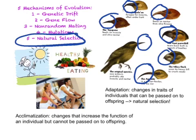I want to clear up a misconception. An adaptation is any change in a trait that is advantageous and can be passed on to offspring — this drives natural selection. For example, tall giraffes have tall babies; tallness can be passed on. On the other hand, acclimatization is a change that increases the function of an individual but cannot be passed on. Examples of acclimatization include exercise, eating healthy, and learning not to do dangerous things — all of which help humans survive longer in their lifetimes, but cannot be passed on to children. Natural selection deals with adaptation, not acclimatization.